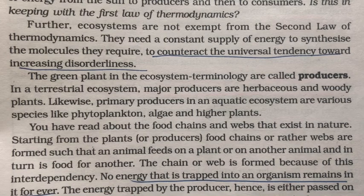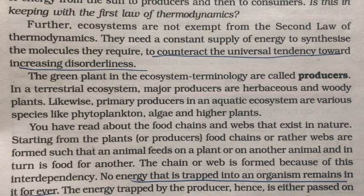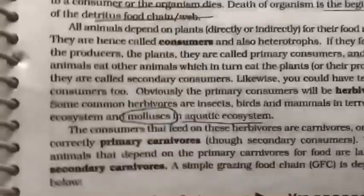All trophic levels in an ecosystem are interconnected through energy transfer, which can be explained using food chains and food webs. A food chain is the transfer of energy from one trophic level to the next — from producer to consumer. There are two types: the grazing food chain and the detritus food chain.